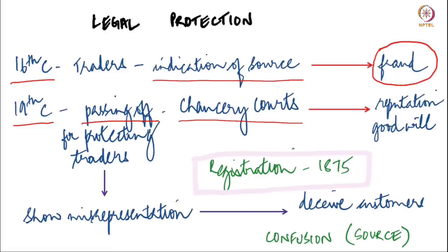Passing off was the first relief that came to protect trademarks, and passing off still exists when it comes to protecting unregistered trademarks. The relief of passing off was tied to the reputation and goodwill that the trader had evolved over a period of time. The focus was on preventing misrepresentation and the relief offered was to stop the person misrepresenting his goods as the trader's goods. Till the 19th century there was no registration for trademarks — marks attained reputation and goodwill by usage.